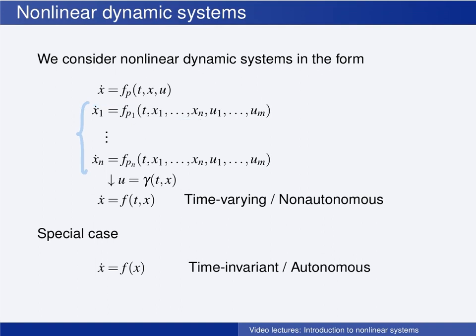The control design consists of finding a controller, and when substituting this into the process model, we get the equation for the closed loop system. In general, this is a nonlinear time-varying system, meaning that the time shows up explicitly on the right-hand side of the dynamic equation. x is of course time-varying, since this is a differential equation, but in order to be a time-varying system, the time t has to show up explicitly on the right-hand side.